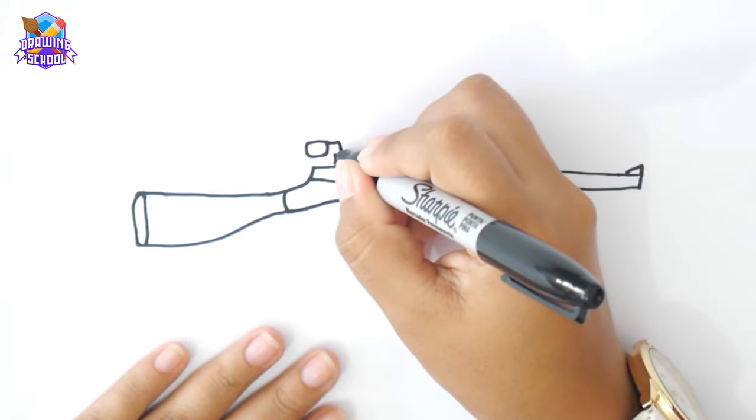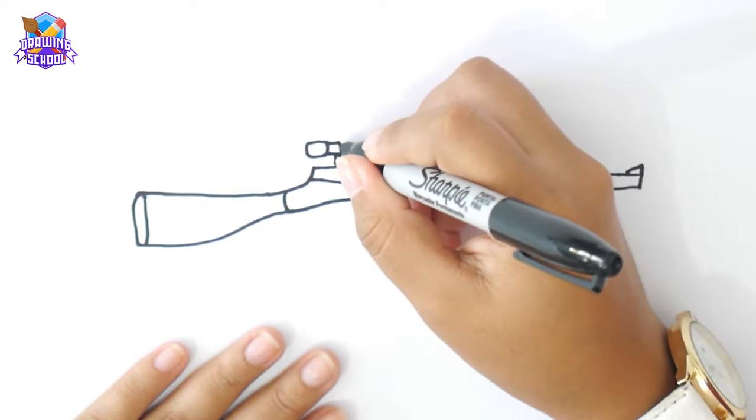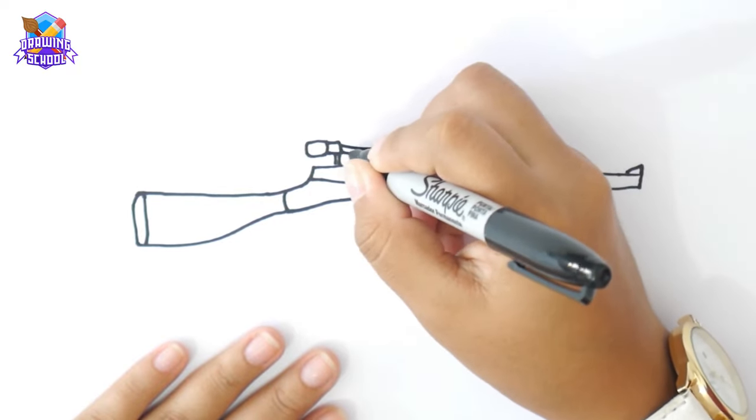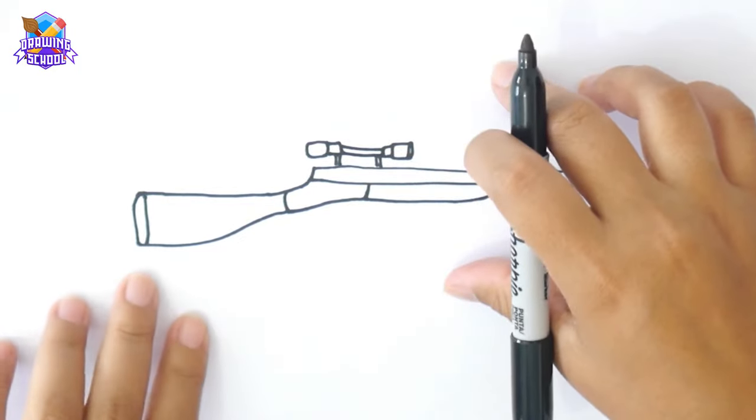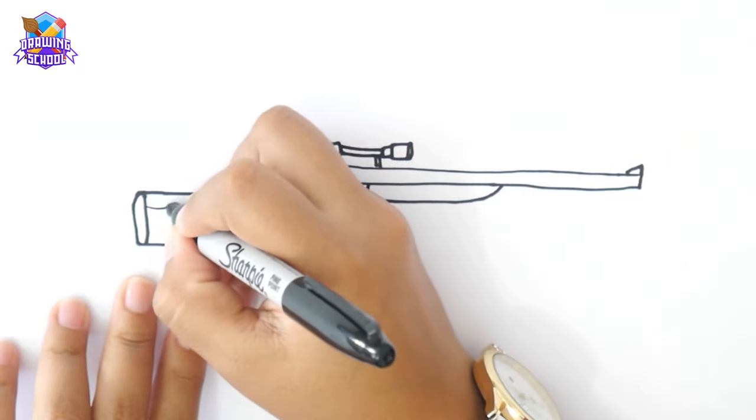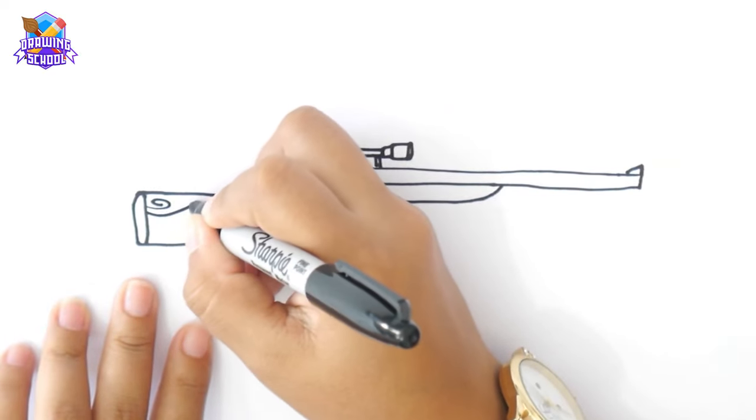Now the only thing we have to do is add some details to this gun. For instance, some spirals on the handle, so it looks like it's wooden.